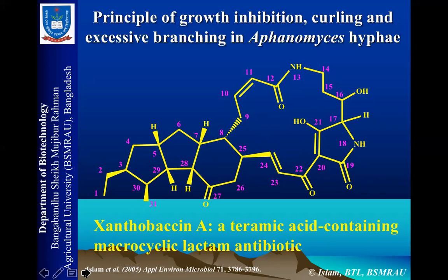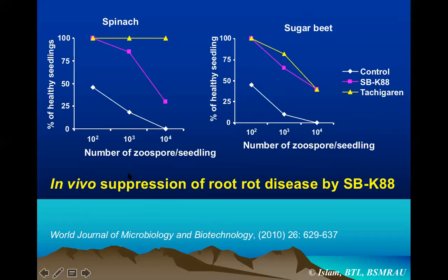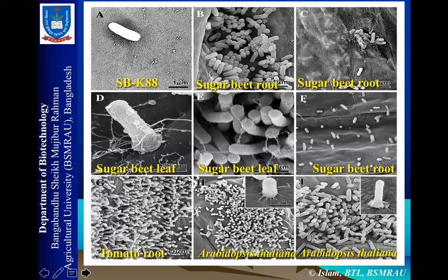We published this paper in Applied and Environmental Microbiology. When we compared SBK818 with tachigarine, a synthetic pesticide against Aphanomyces cochlioides, both showed high control of the disease. That means SBK818 is a powerful biocontrol agent which produces Glidobactin A, suppresses the disease, and controls the plant of sugar beet. When we treated seeds with the bacteria, we found that it can control the disease.